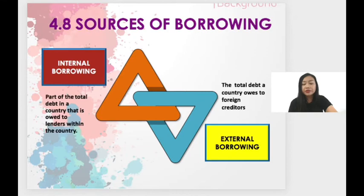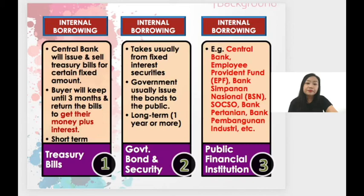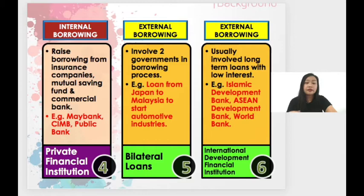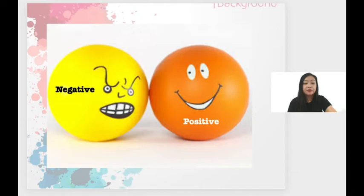The sources of borrowing are internal and also external. Internal borrowing comes from treasury bills, government bonds and securities, public financial institutions, and private financial institutions. External borrowing consists of bilateral loans and also international development financial institutions. Borrowing also carries both negative and positive values.